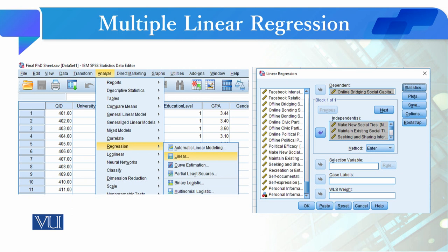Self-expression, these are all motivations we have as independent variables to predict the variance of online bridging social capital.